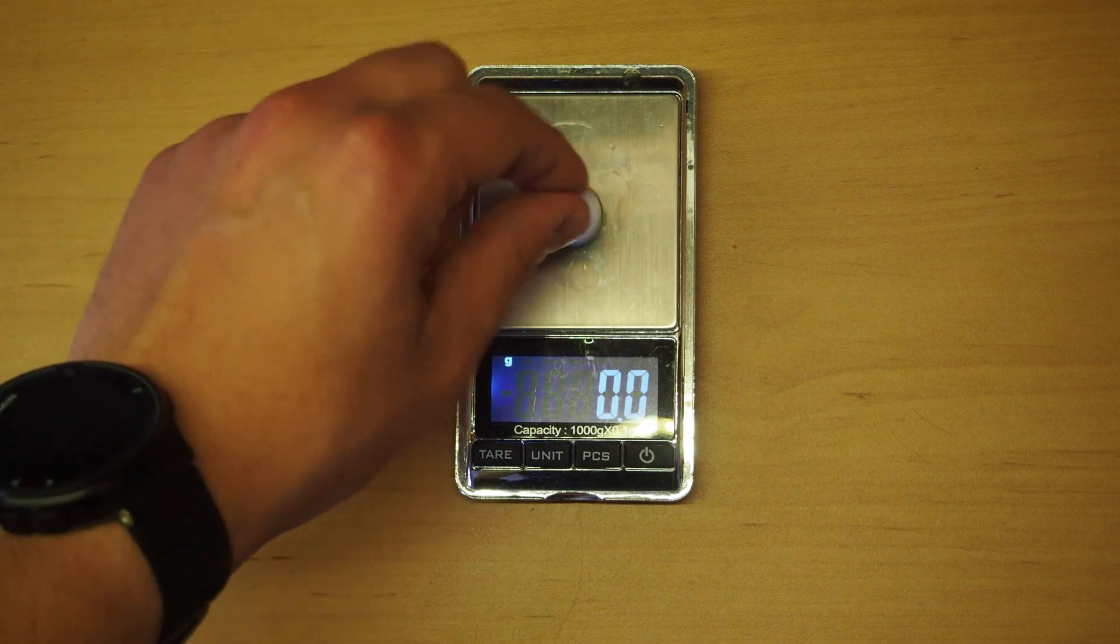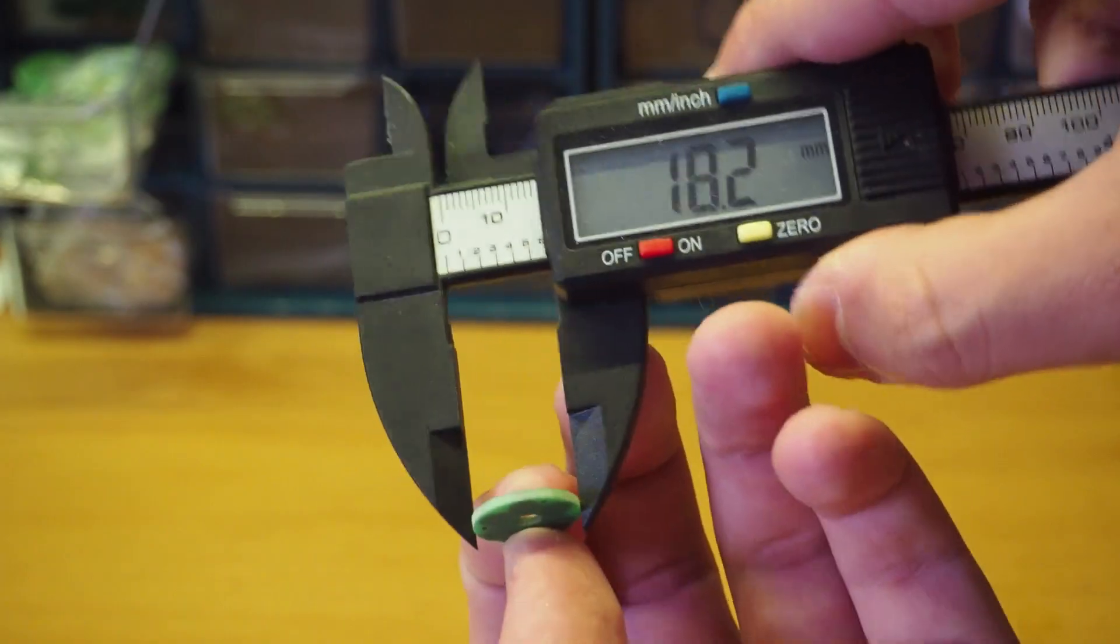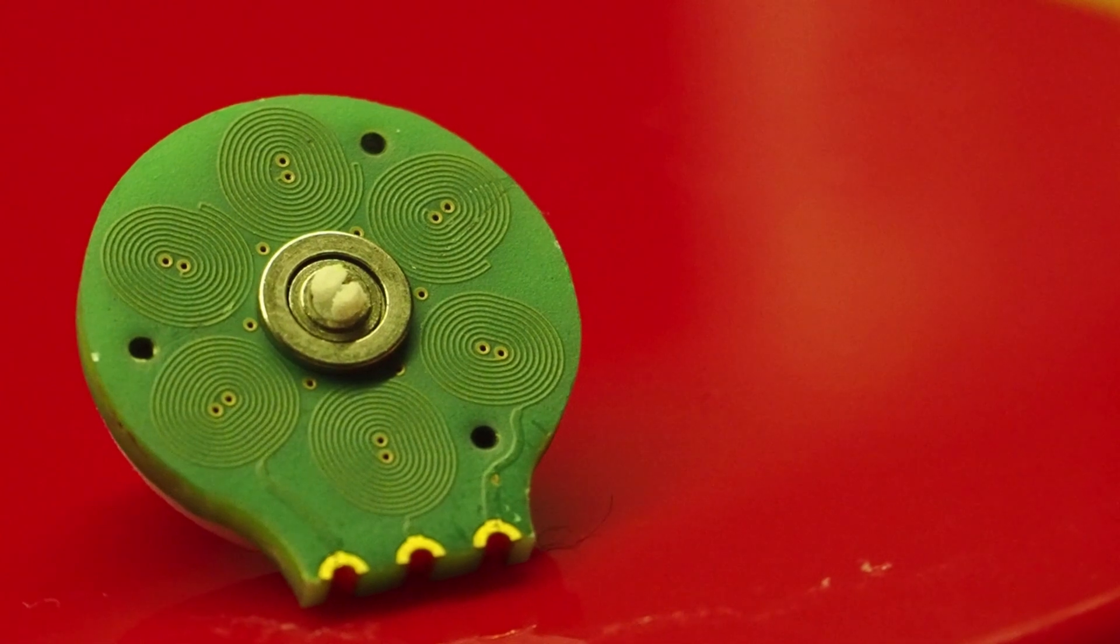It weighs 1.6 grams and has a 16mm diameter. In this small area I have managed to fit 6 coils with 4 turns each connected in a delta configuration.